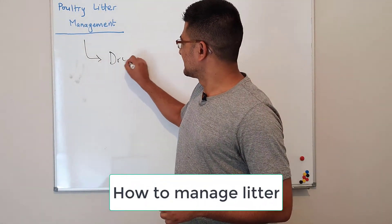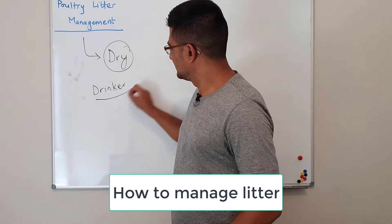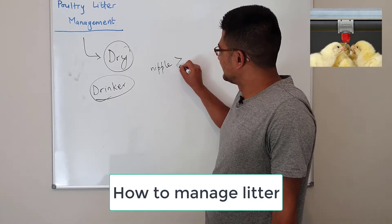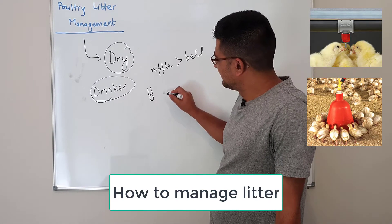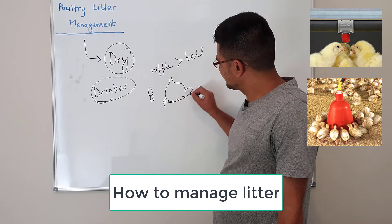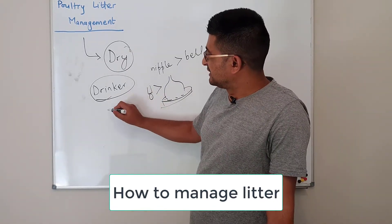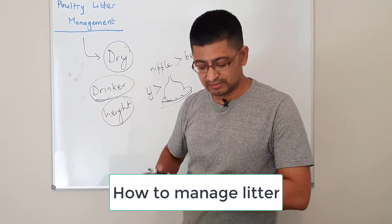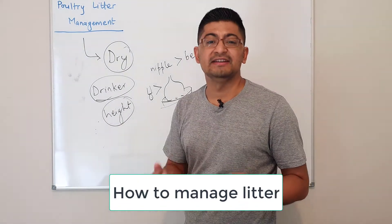We always need to remember that litter should be as dry as possible. To make litter dry, we should manage drinkers. Several studies have said that nipple drinkers are better than bell drinkers. A nipple drinker gives just a drop of water, while a bell drinker has an open water surface. Nipple drinkers are better for managing litter. Also, the height of the drinker should be optimum — if it is too high or too low, chickens will spill a lot of water into the litter.